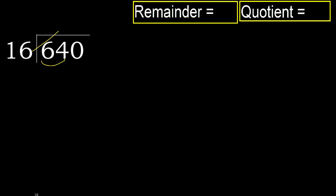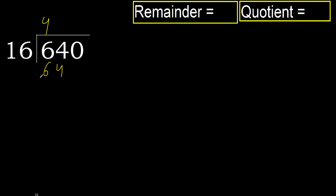16 multiplied by which number is nearest to 64 but not greater? 16 multiplied by 5 is greater; multiplied by 4 is 64. 64 is not greater, ok subtract 0.